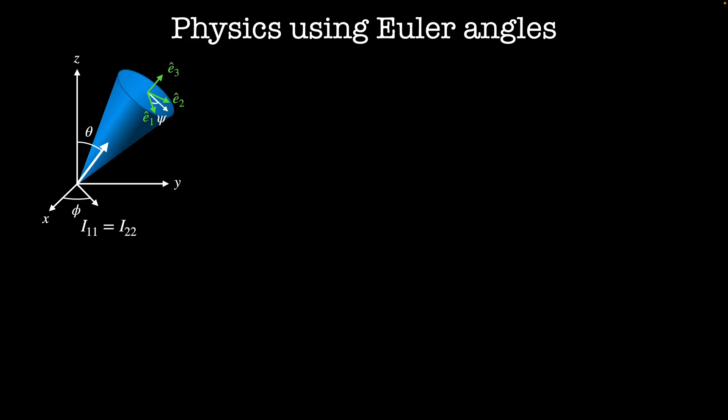Hello, and welcome to Classical Mechanics 2. In this video, we'll find that the Euler angle description is a natural coordinate system to study the physics of rotating tops.